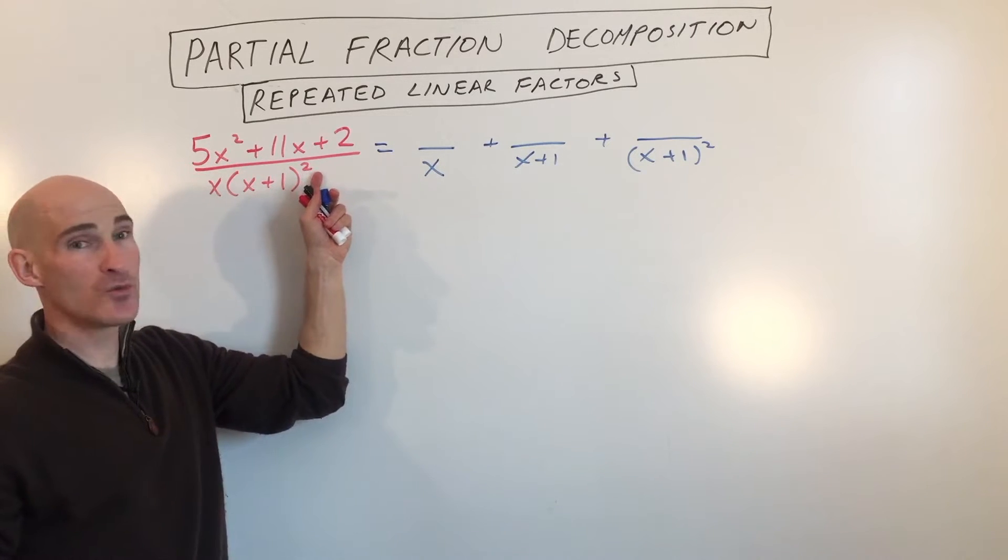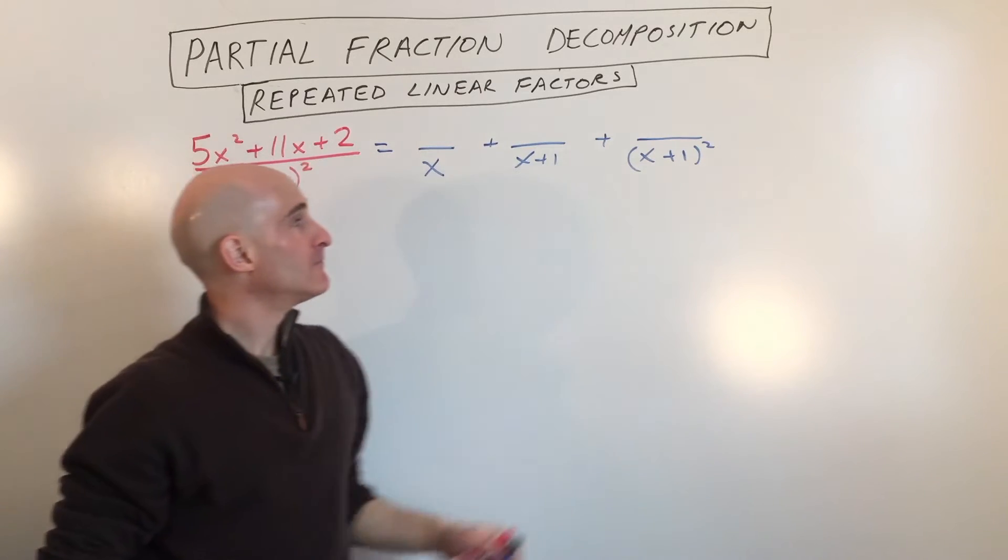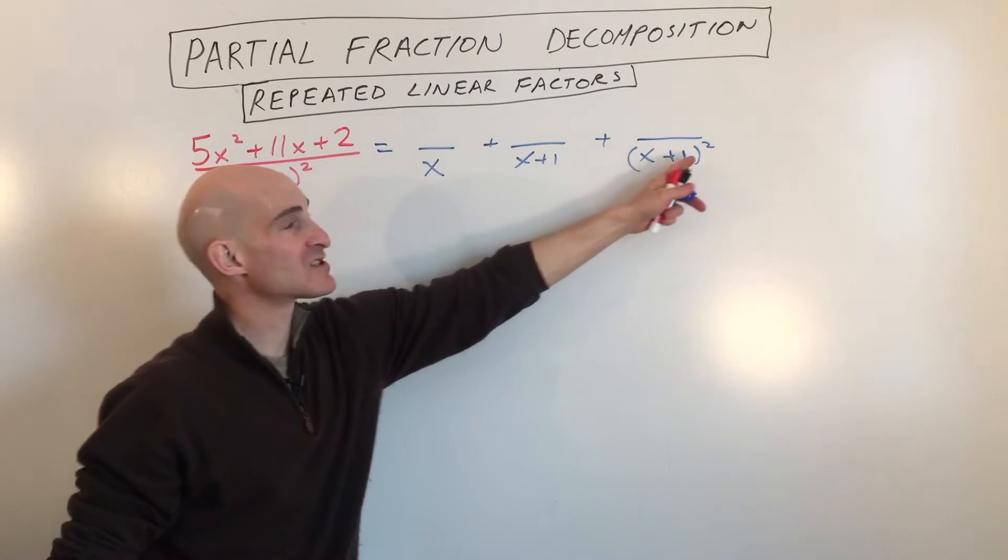Now, if this was x plus 1 cubed, we would have x plus 1, x plus 1 squared, and then x plus 1 cubed. But you can see here it's just to the second power.